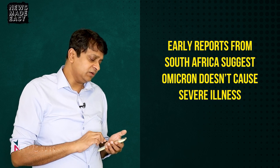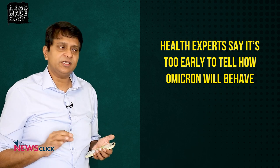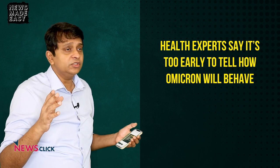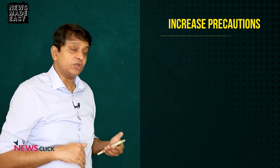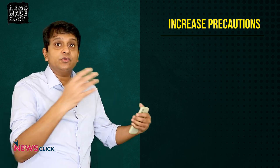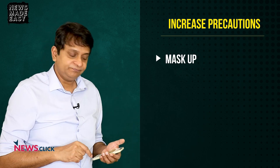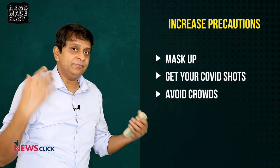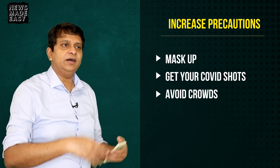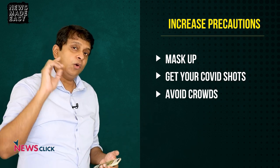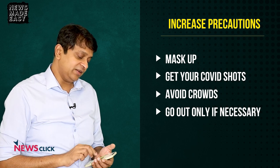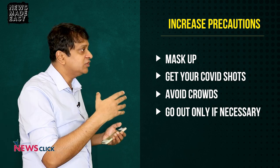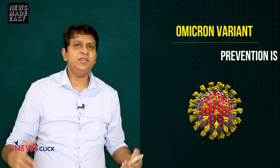Health experts are saying it's too early to decide how the Omicron variant is going to behave. So all you can do is continue to take precautions — and in fact increase them. If you thought it was over, at least in India: mask up, get your COVID shots if you haven't yet, and avoid crowds. It's tempting to go out saying it's over, but avoid it and go out only if necessary.